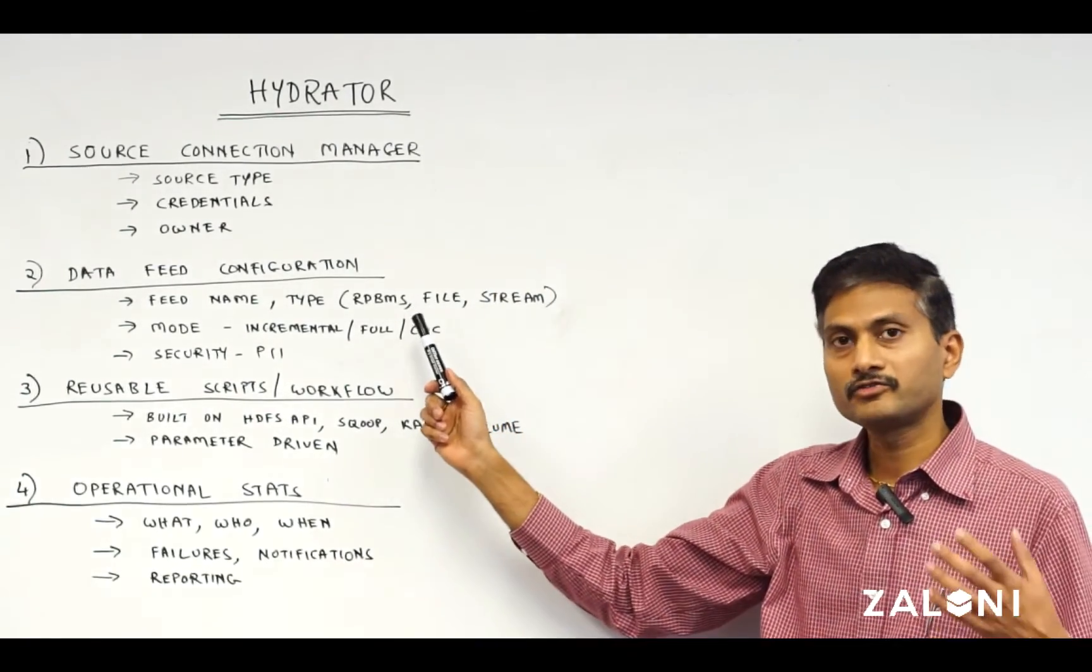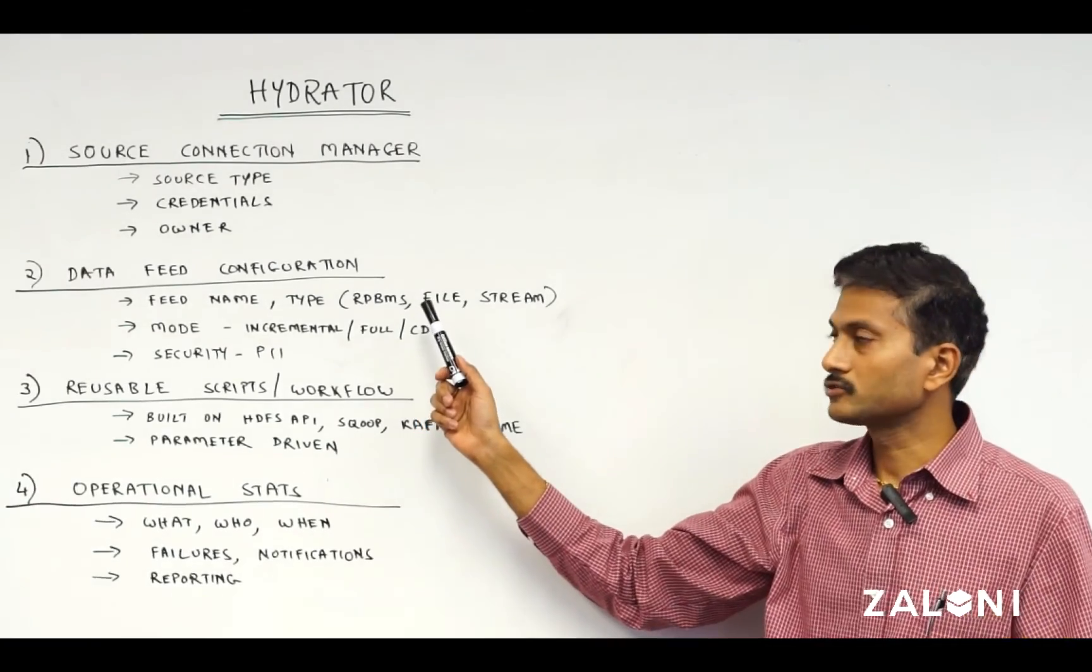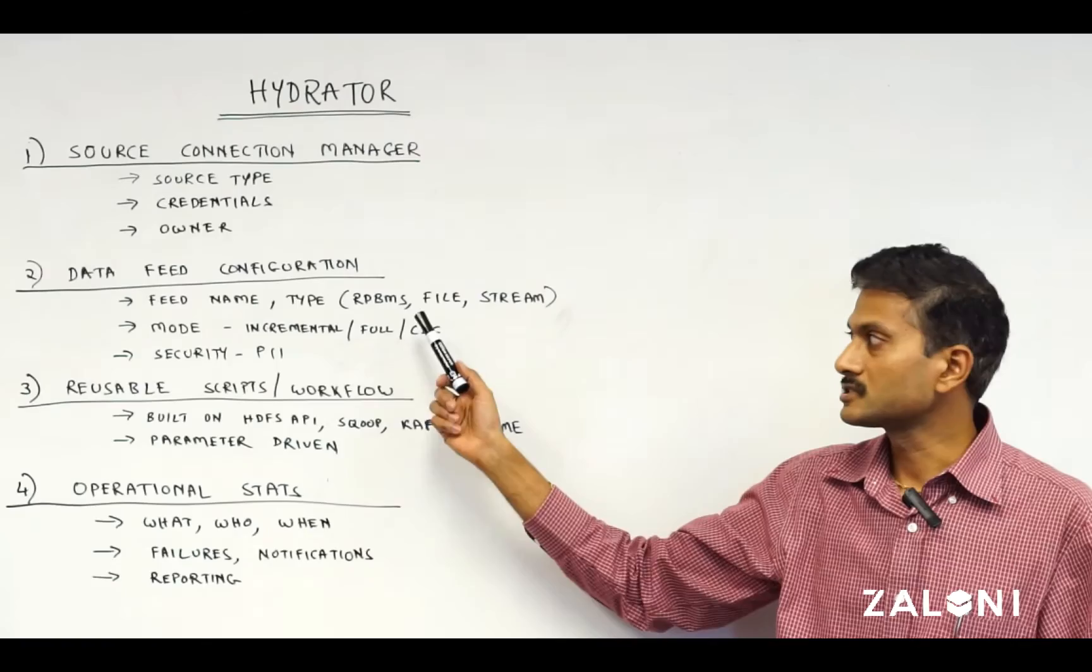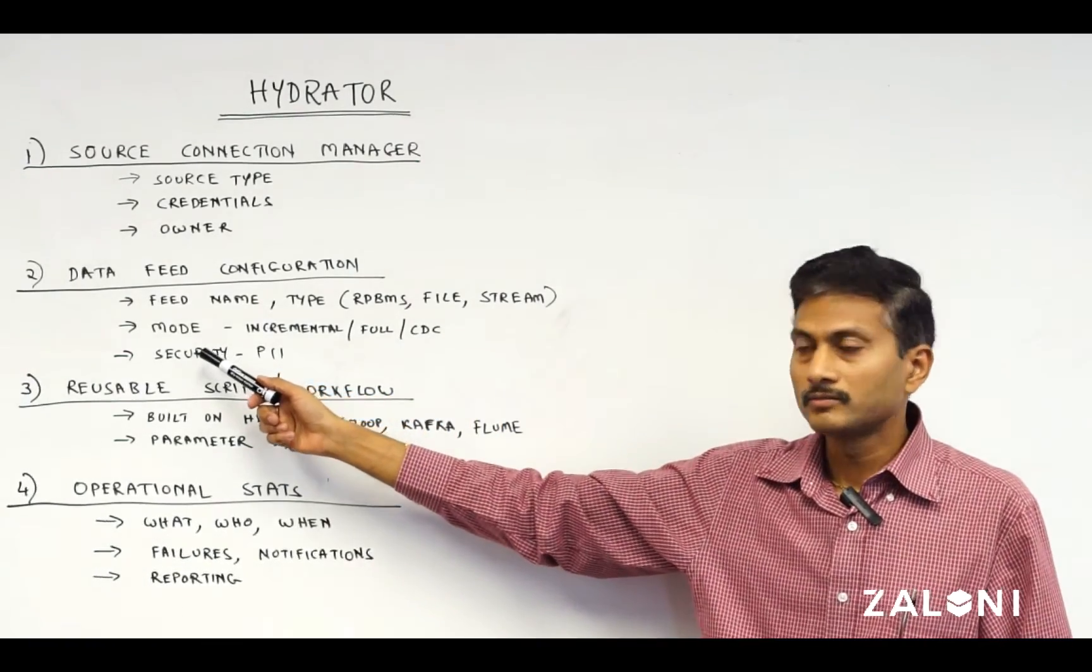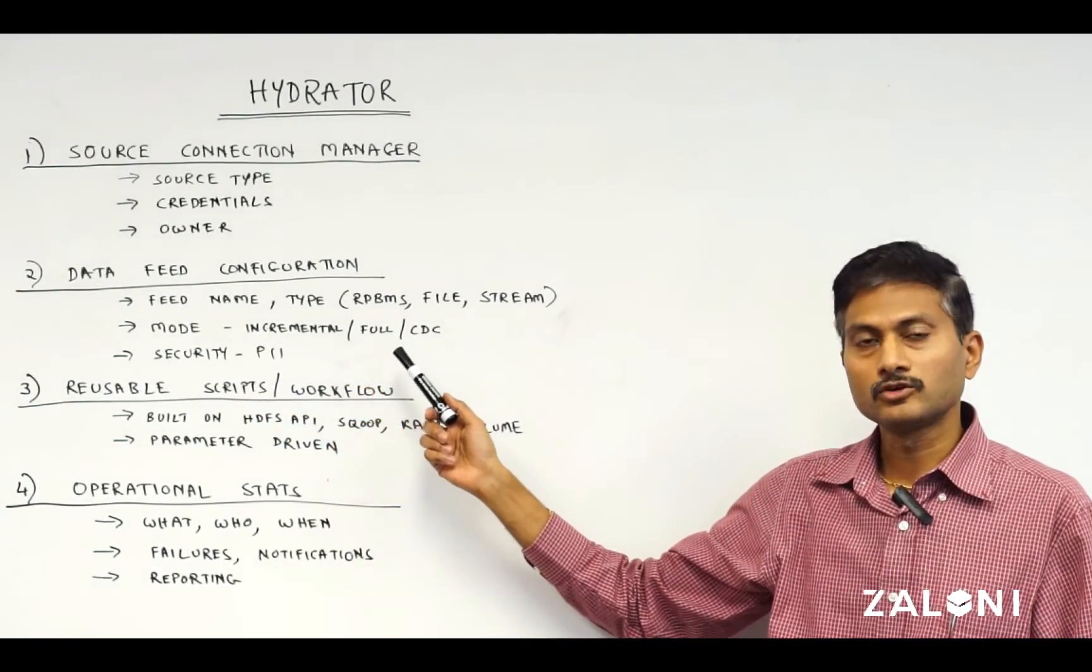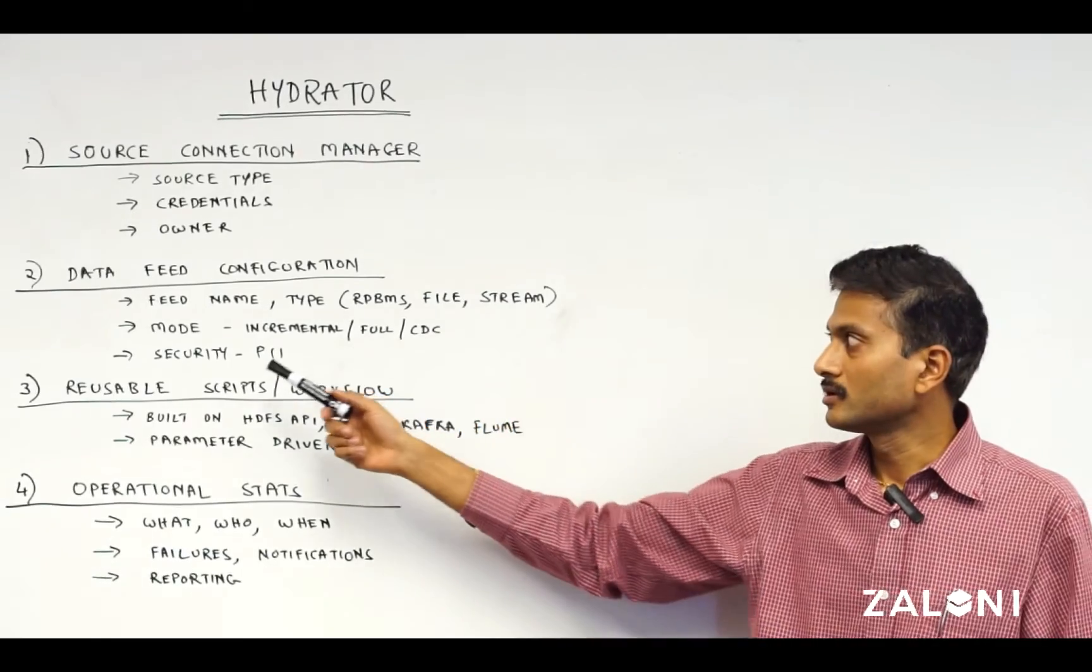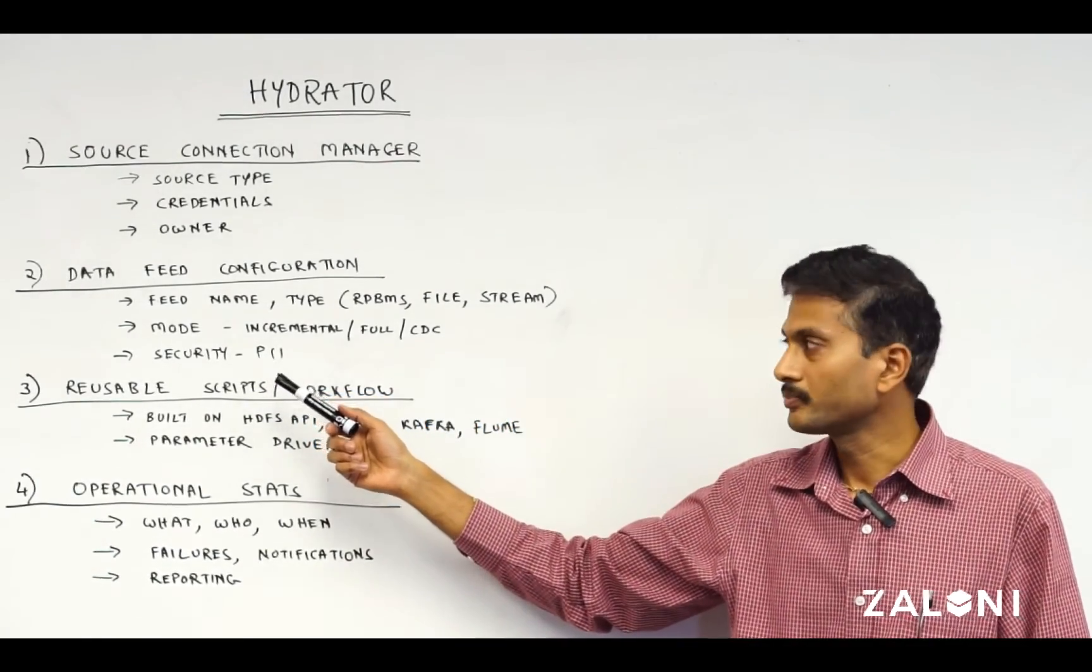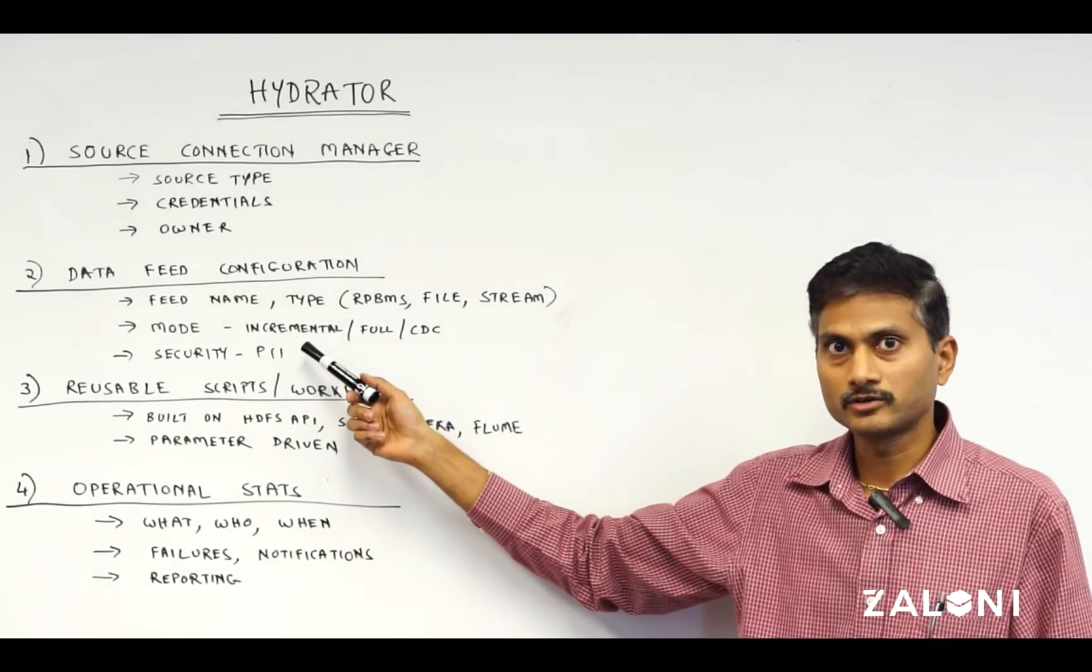Second, you need a data feed configuration. For each of those sources, what are the feed names, what are the types, the mode? Is it incremental, full, CDC? What's the security implications? Are there any PII fields? So that goes into the data feed configuration.